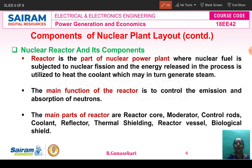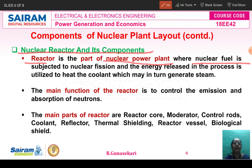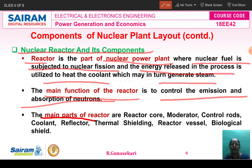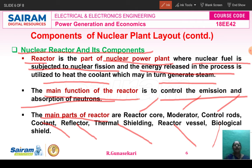Now we will study in detail the components of the nuclear power plant. The first one is the nuclear reactor. The nuclear reactor is the part of the nuclear power plant where the nuclear fuel is subjected to the nuclear fission process. The energy released is utilized to heat the coolant, which is used to generate steam. The main function of the nuclear reactor is to control the emission and absorption of neutrons. The main parts of the reactor are: reactor core, moderator, control rods, coolant, reflector, thermal shielding, reactor vessel, and biological shield. The function of all these nuclear reactor components was already studied in the previous lecture video.